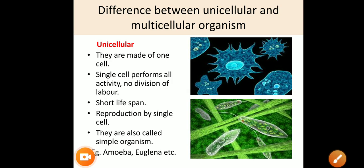Now the next topic is the difference between unicellular and multicellular organisms. Organisms made up of only one cell are called unicellular organisms. Organisms made up of many cells — like our body, which is made up of trillions of cells — are called multicellular organisms. If a body has only one cell, it is unicellular; if it has more than one cell, it is multicellular.